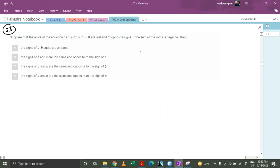Let's look at question number 33. Suppose that the roots of equation ax square plus bx plus c equals to 0 are real and of opposite signs.